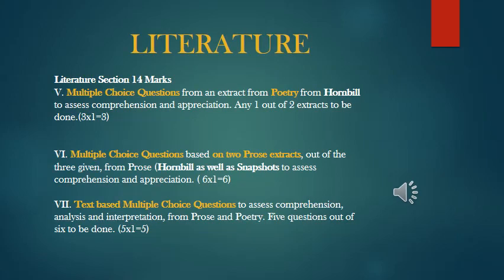The literature section has 14 marks. There will be multiple choice questions from an extract from poetry from Hornbill, to assess comprehension and appreciation — meaning you can critically evaluate different aspects of the poem, like similes, metaphor, intended meaning, contrast. Any one out of two extracts to be done, so there will be choice — two extracts from two different poems and you have to do one.